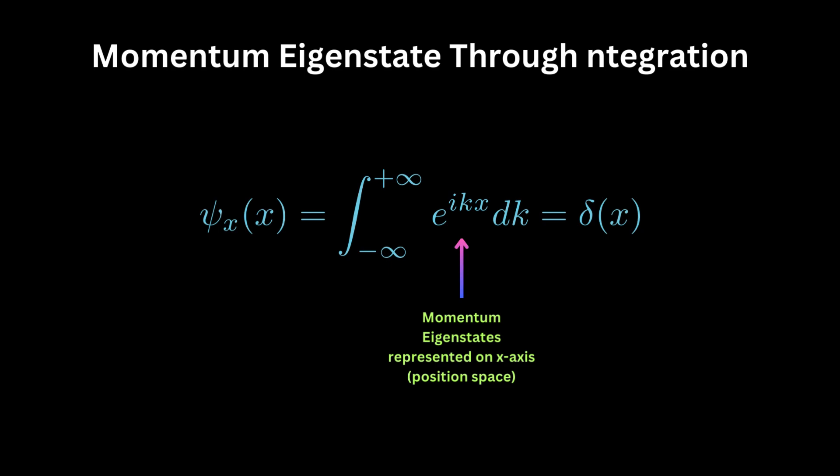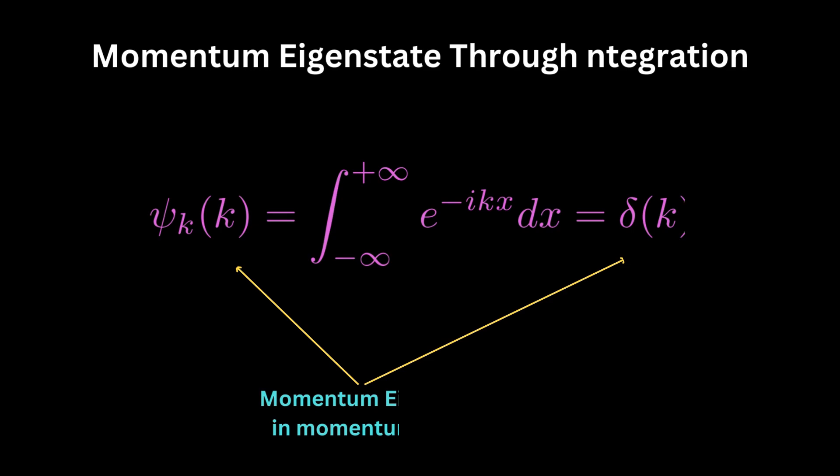We can also get the momentum eigenstates by doing a similar integration. To find the position eigenstate, we integrate it over all momentum eigenstates on the entire k-axis. So if we want to have momentum eigenstate in the momentum space itself, we must reverse everything. First, we move on to the k-axis, or momentum space, by integrating over x values, and second, we find the representation of the position eigenstate in this momentum space. The position eigenstate in the momentum space is the reciprocal of momentum eigenstate in the position space, and we get a delta function in k-space.